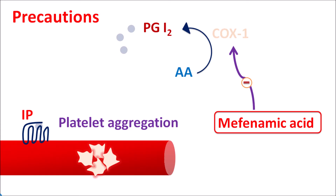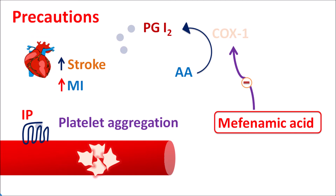The risk of thrombotic events is more pronounced with long-term use of mefenamic acid. Just like other NSAIDs, mefenamic acid can increase the risk of stroke as well as myocardial infarction. In patients with pre-existing cardiovascular abnormalities, thrombotic events such as stroke, myocardial infarction, or atherosclerosis, mefenamic acid should be carefully used as it further increases the risk of stroke and cardiac damage.